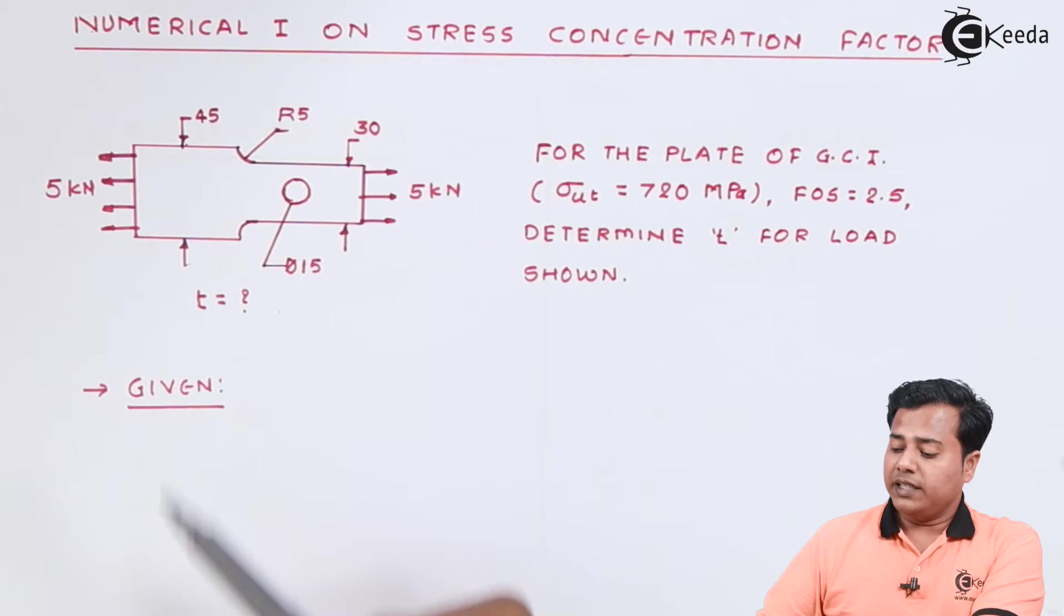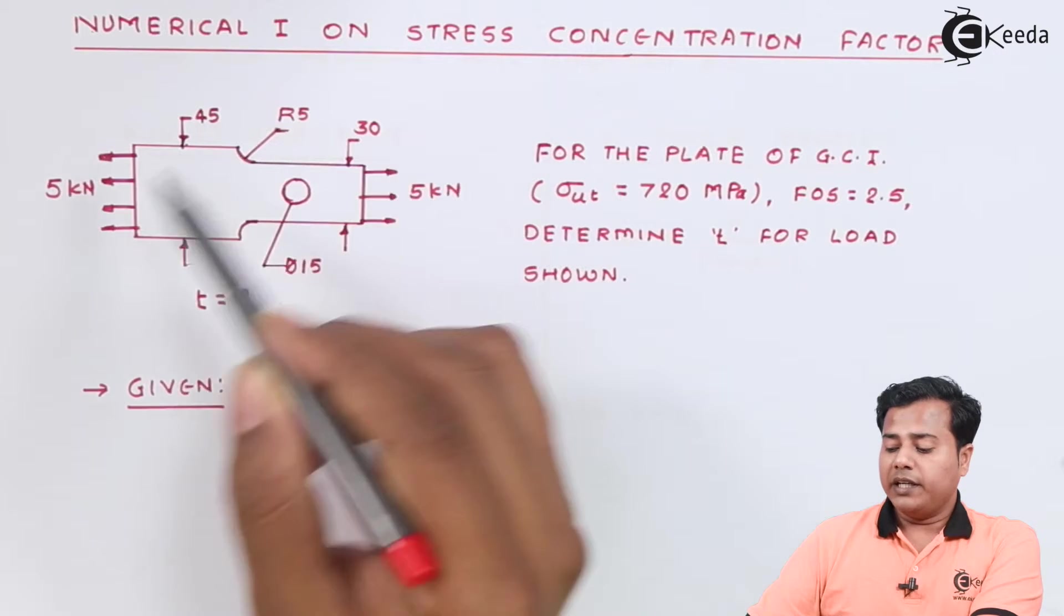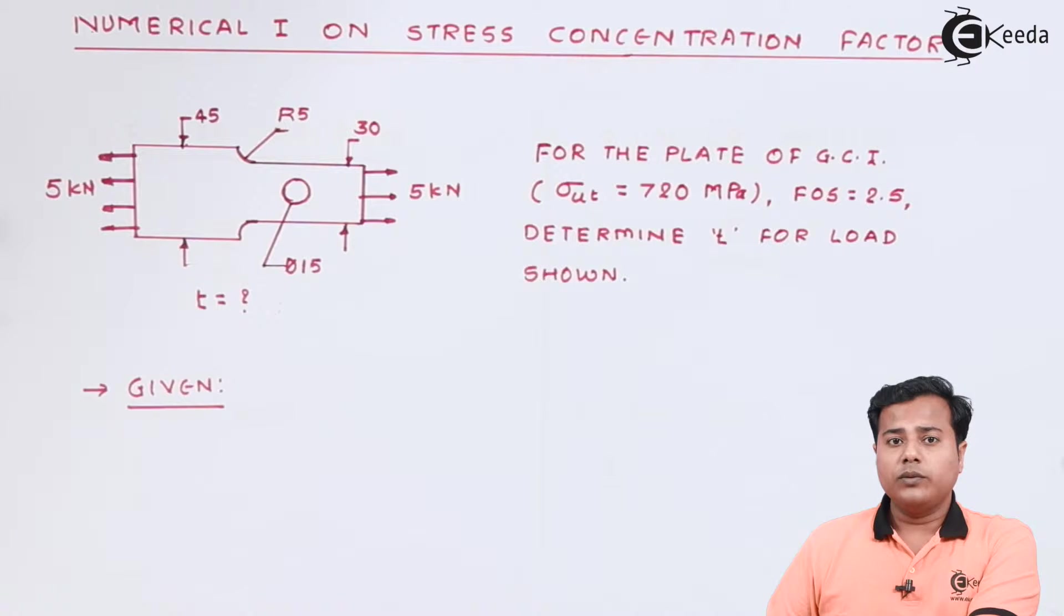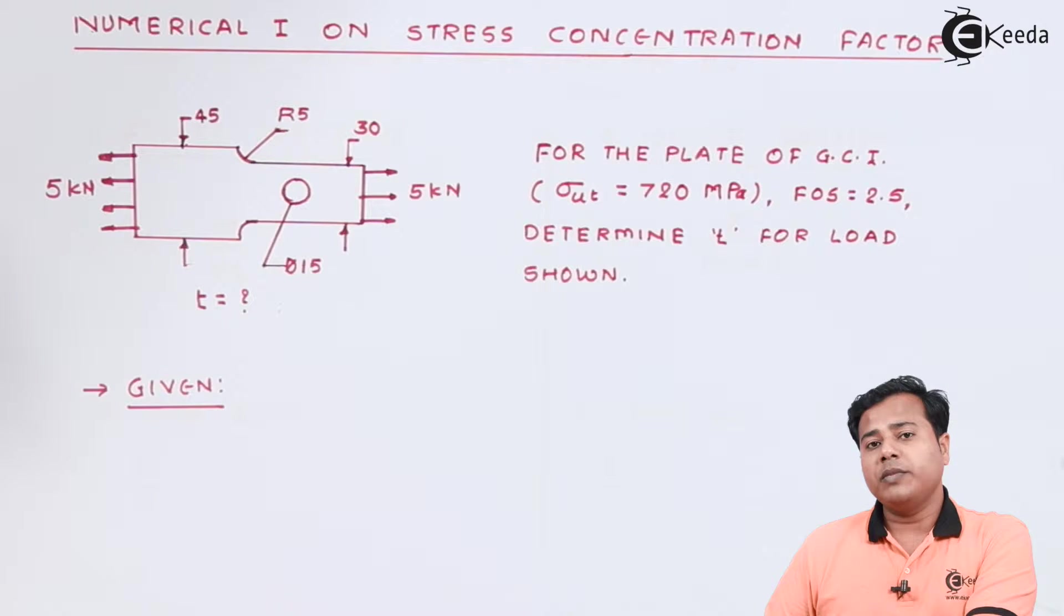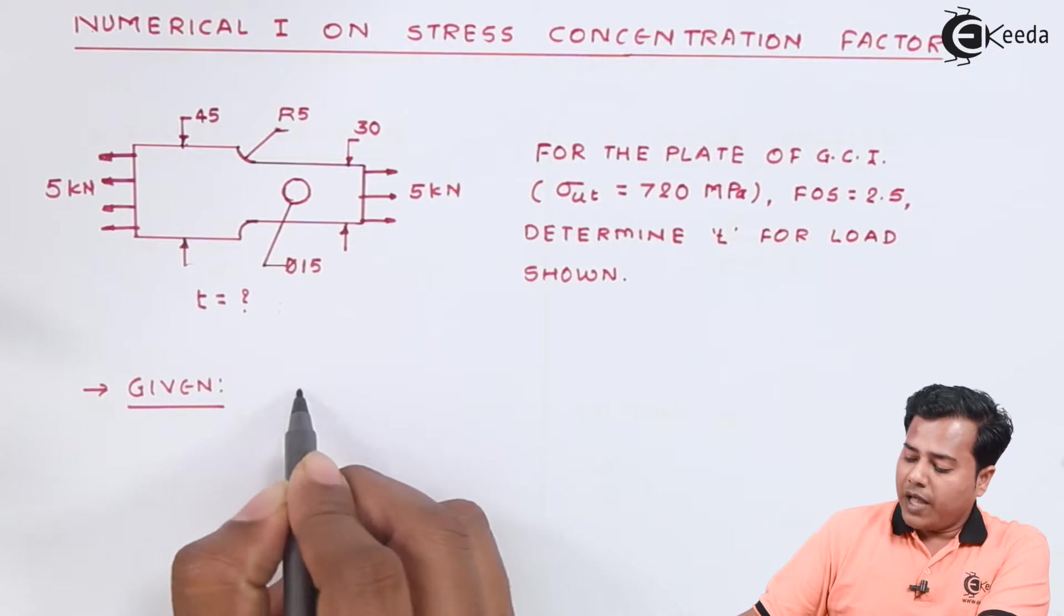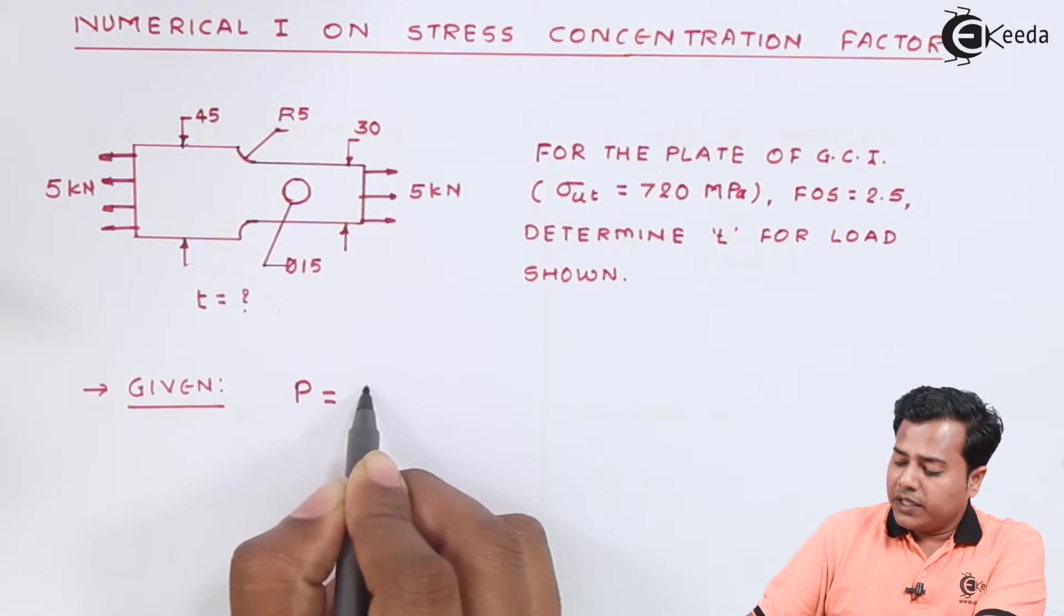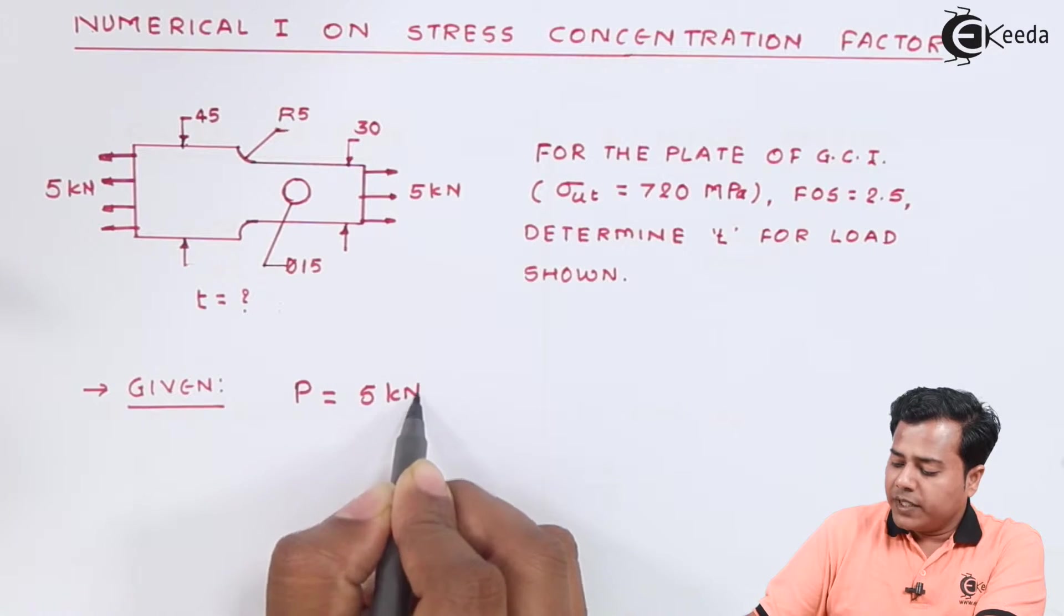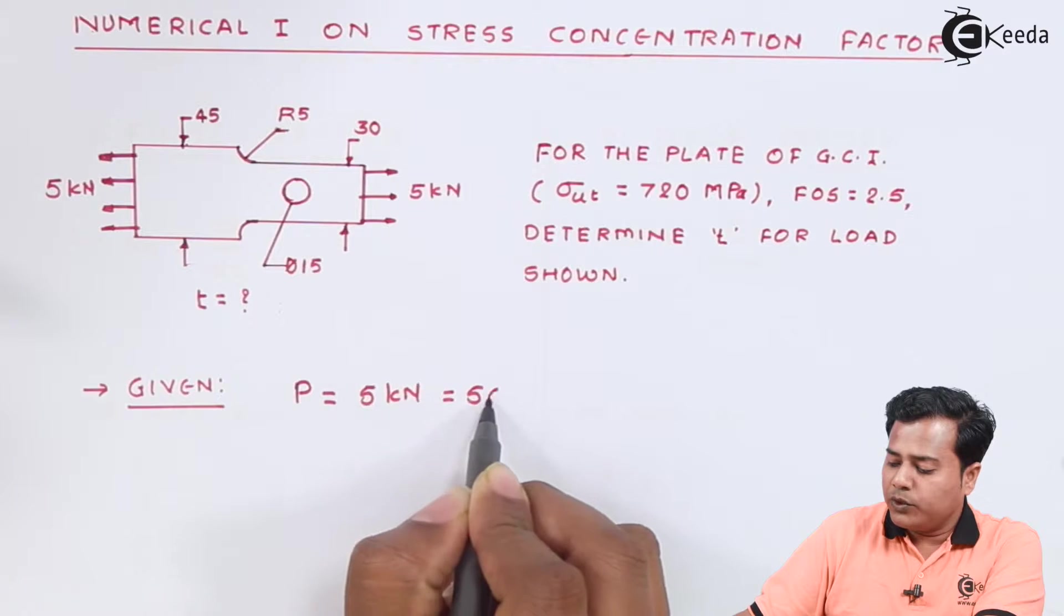This particular plate is undergoing cyclic load and that's why it will fail before the actual estimated value of stress or strength. There are two factors responsible which we are going to discuss. Let's write down the given data first. We have been given the value of P is 5 kilonewton, that is basically 5000 Newton.